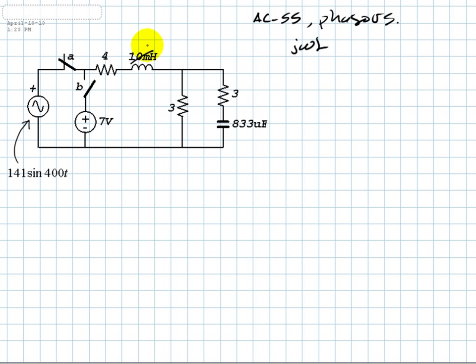And we replace the capacitor by its impedance, negative j 1 over omega C. We operate with this 400 radians per second and that capacitance, and we get that this impedance is negative j3. We are ready. We control that circuit in AC steady state before this switch opens and that switch closes. Let me erase this branch because it's doing nothing but confuse the topic.